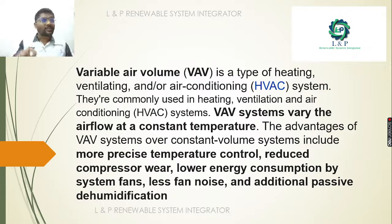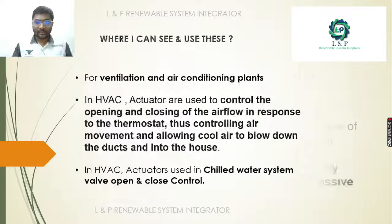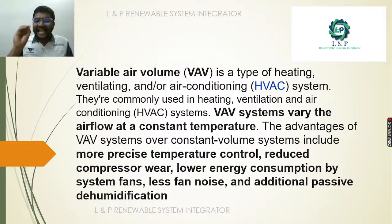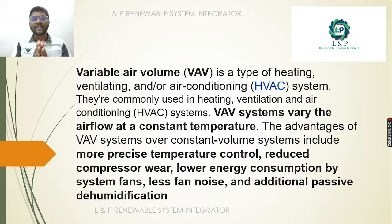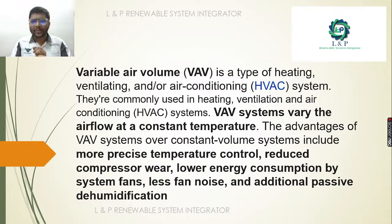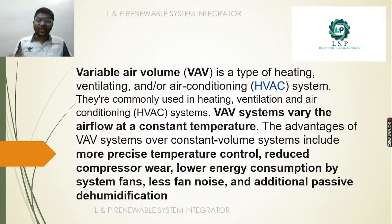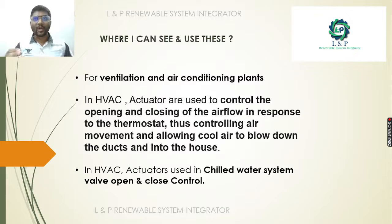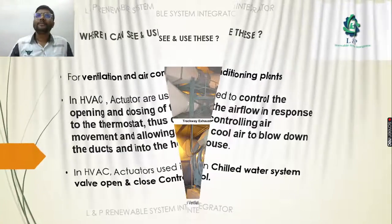Today we are discussing application scenario 6521. The main purpose of VAVs is to maintain a constant temperature by controlling or modulating the air flow. The advantages of using this include precise temperature control, reduced compressor wear, reduced energy consumption, reduced noise pollution, and passive dehumidification. Wherever HVAC systems have air handling units, fan coil units, or variable air volume units in the field, these controllers can be used.